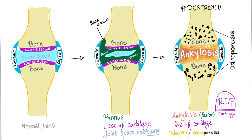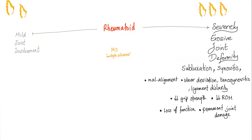Sometimes there is eventual ankylosis, which is fusion. Loss of cartilage occurs, along with osteopenia and osteoporosis in the adjacent bone. Symptoms of rheumatoid arthritis can range from very mild joint involvement all the way to severe erosion and joint deformity with subluxation, synovitis, malalignment, ulnar deviation, tenosynovitis, and ligament laxity. Decreased grip strength, decreased range of movement, loss of function, and permanent joint damage can result. It's a horrible disease.